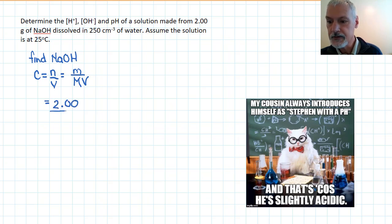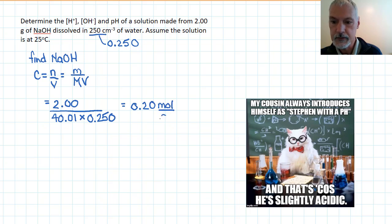The molar mass of sodium hydroxide is 40.01. And the volume of my solution, 250 cubic centimeters, which I'll put right away into decimeters cubed or liters. So this then gives me the concentration of the sodium hydroxide solution. It's 0.20 moles per decimeter cubed.